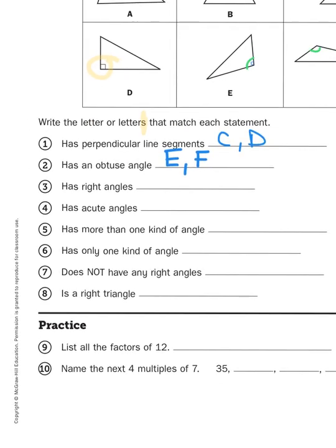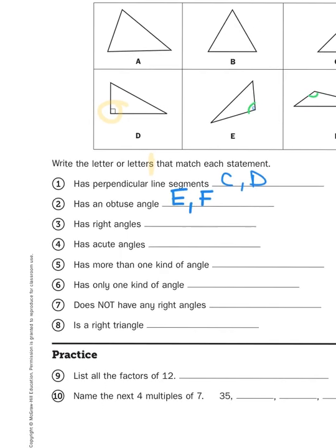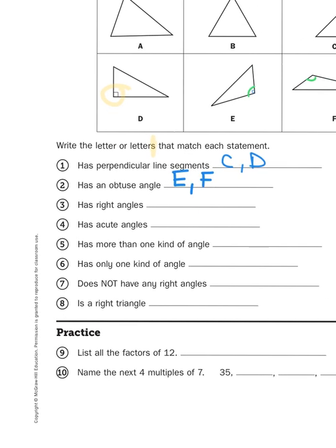So that's how we go about doing it. So we have to look at each descriptor and then we have to think about, well, which of these triangles match. Okay. So some of the clues or riddles help us solve the other ones. For example, if I look at number one, that has perpendicular line segments.